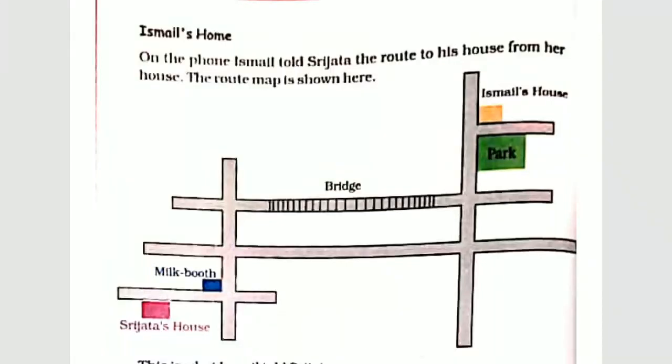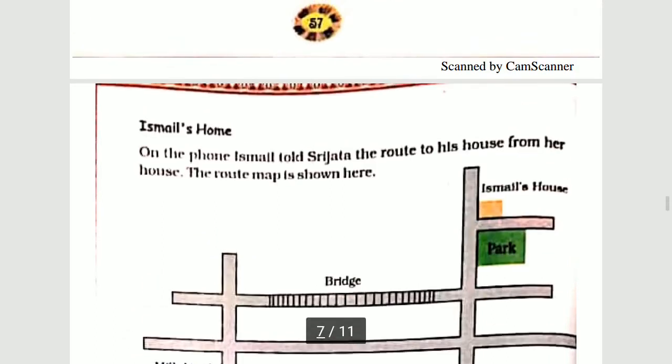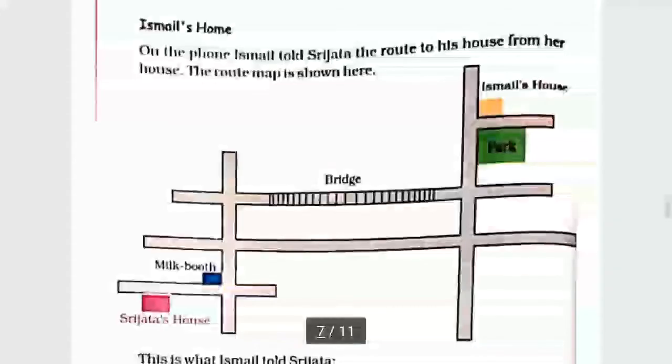Welcome, grade 4 students, to the explanation video of chapter number 5: The Way the World Looks. In the previous video we covered up to page number 57. In this video we will start from page number 58.